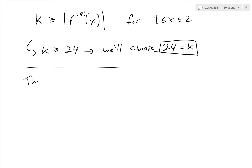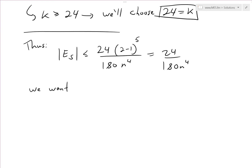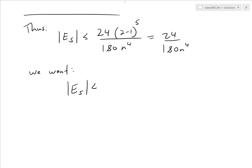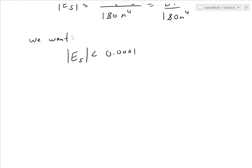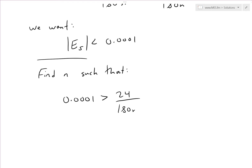With k = 24, the error bound becomes: |Error| ≤ 24(2 − 1)^5 / (180 · n^4) = 24/(180n^4). Since (2 − 1)^5 = 1, this simplifies nicely. We want |Error| < 0.0001, so we need 0.0001 > 24/(180n^4).